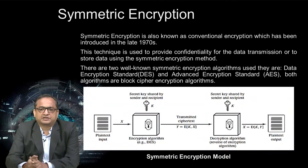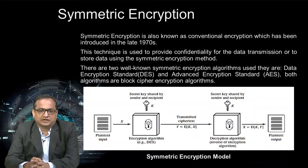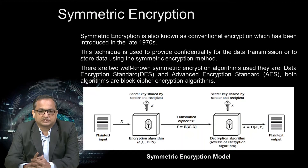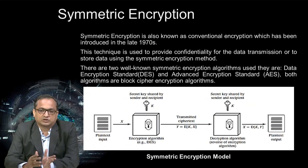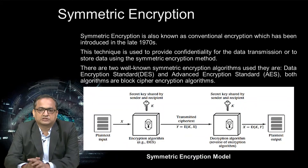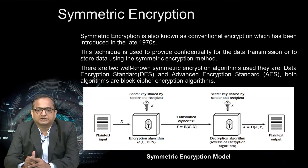Here is a symmetric encryption model: plain text is inputted, a secret key K is set by both sender and recipient, and an encryption algorithm such as DES is applied. The transmitted ciphertext is produced. Then using the same secret key, the decryption algorithm — which is the reverse of the encryption algorithm — is applied, and the receiver receives the same message that was sent by the sender.